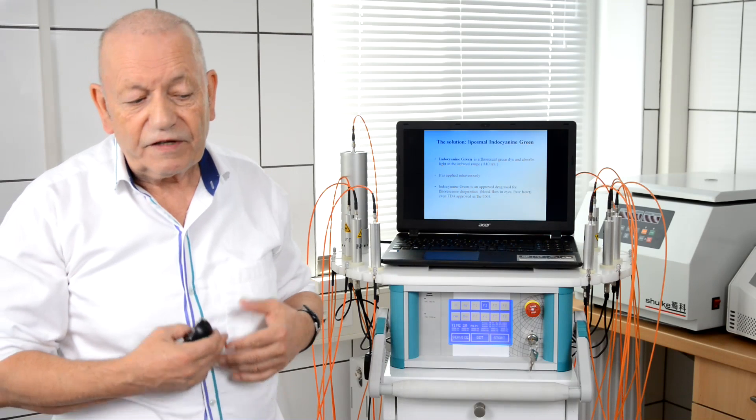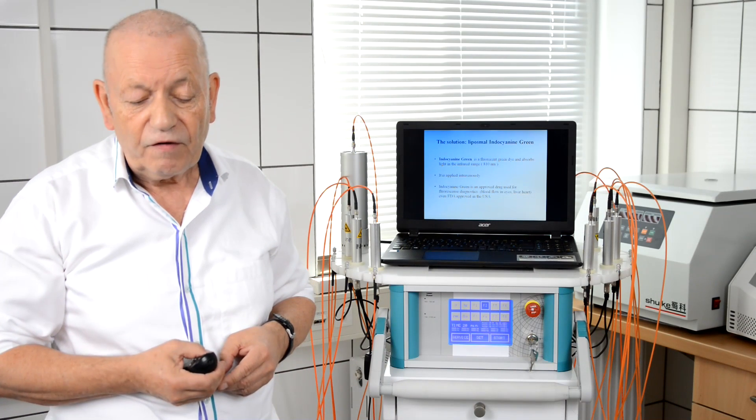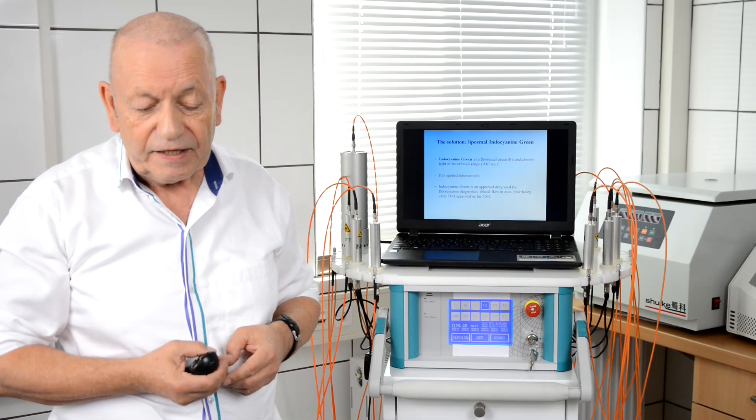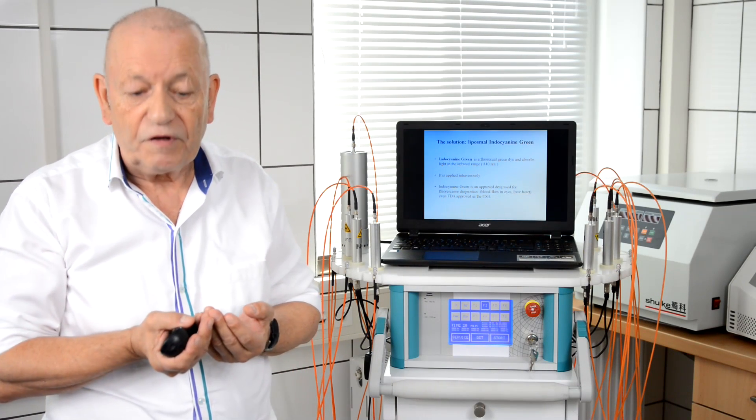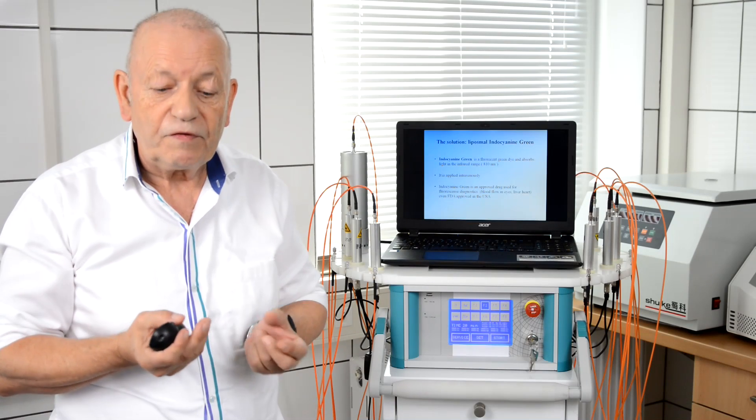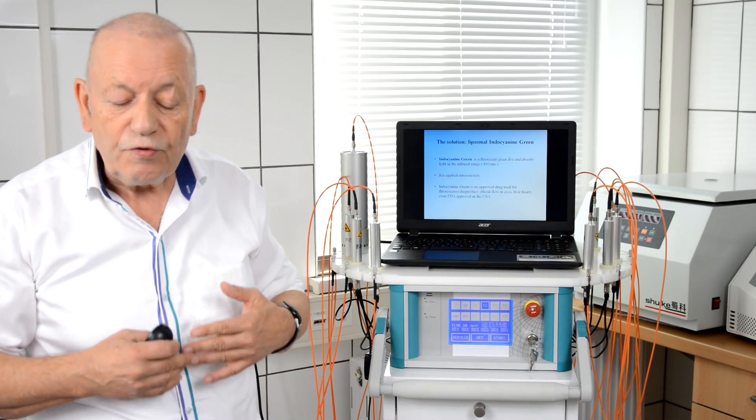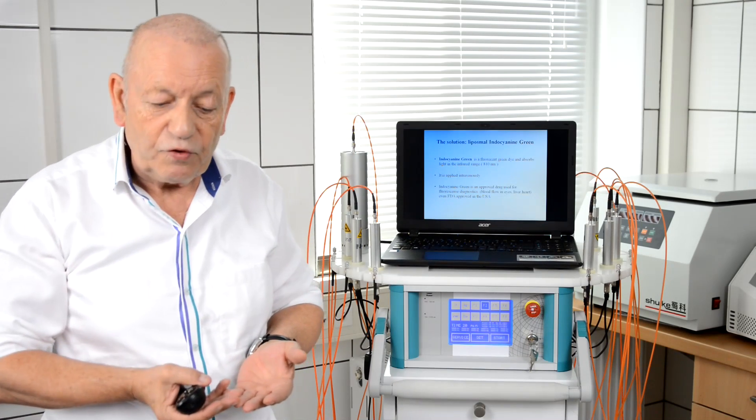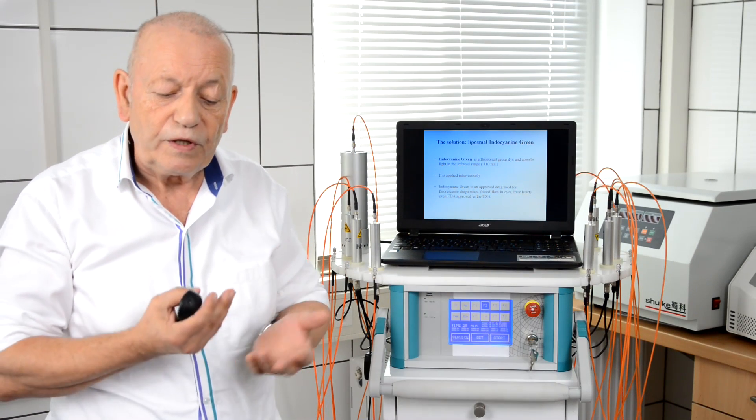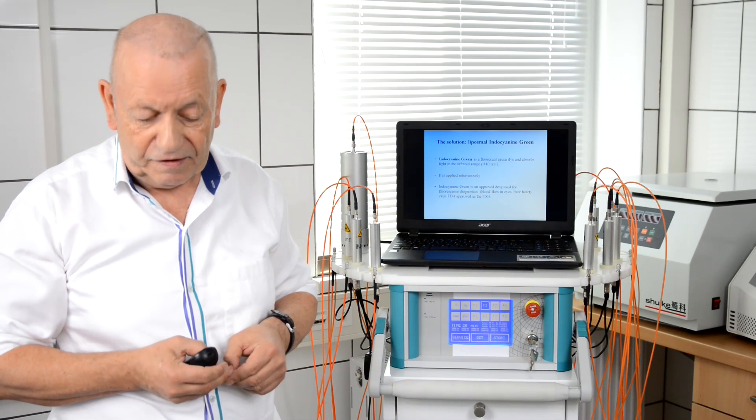Photodynamic therapy of cancer is widely used already in the world for more than 40 years. The principle behind this is using a light-sensitive substance, we call the substance photosensitizer, which we can apply on a tumor from outside as a cream or inject into the bloodstream. This substance will accumulate in cancer cells and will make the cancer cell light-sensitive.